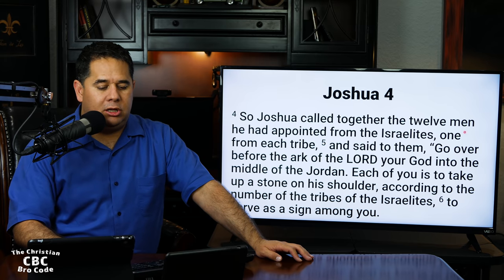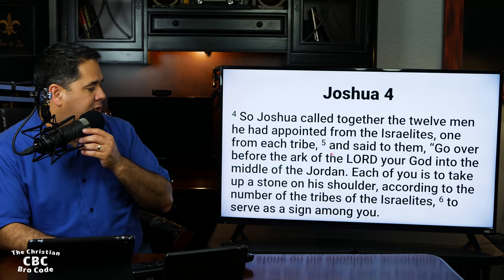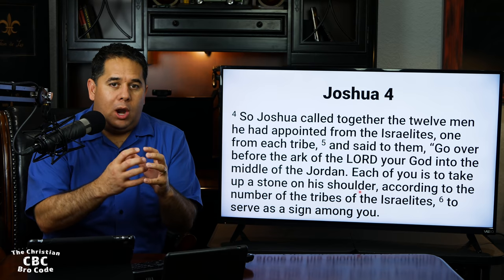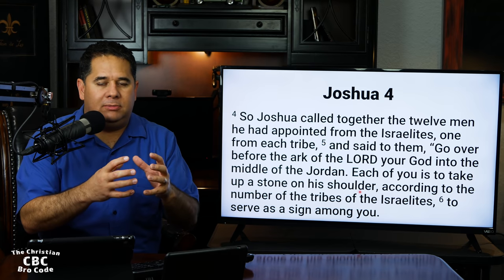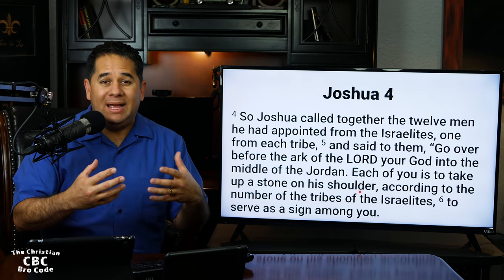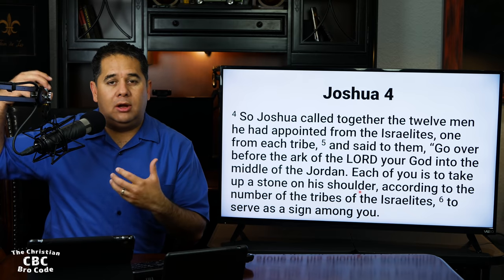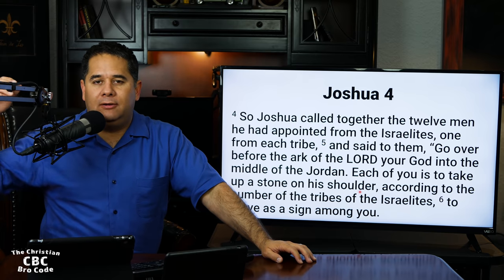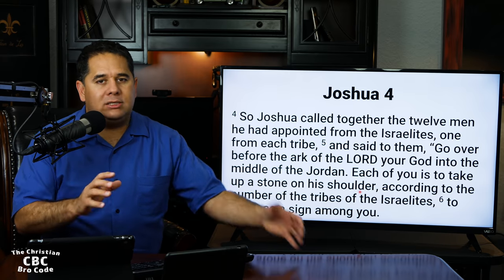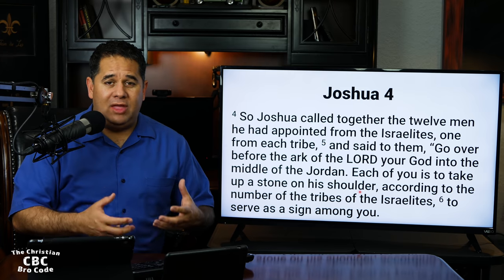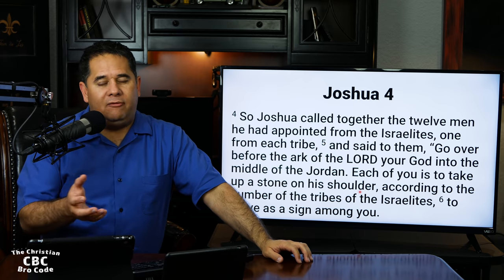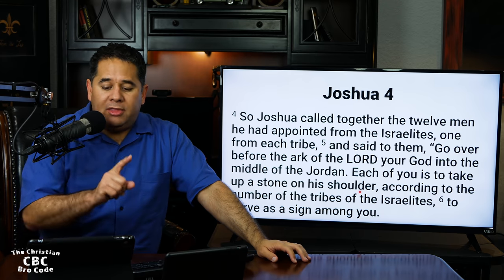'Each of you is to take up a stone on his shoulder, according to the number of the tribes of the Israelites, to serve as a sign among you.' Notice that detail — each man should put a stone on his shoulder. So we're not talking about a grapefruit-sized stone, not the size of a softball or a baseball. We're talking about something big enough and heavy enough to have to hoist onto a shoulder — not as big as Stonehenge, but not small either. These stones had to be hoisted onto shoulders and carried out from the middle of the dry riverbed.